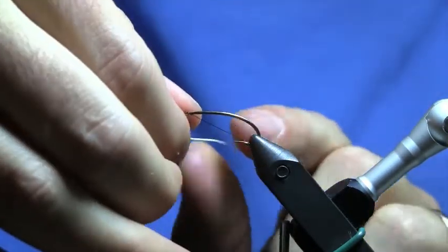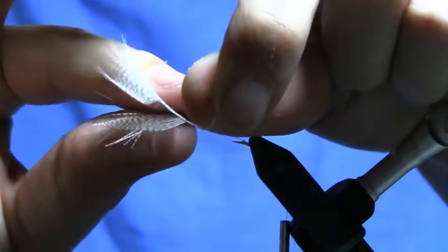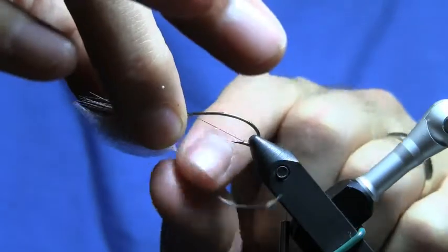With each wrap, I'm working my way backwards towards the bend of the hook. I'm not laying these down on top of each other. Just one right behind the next.